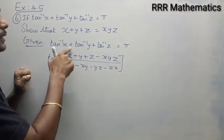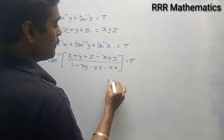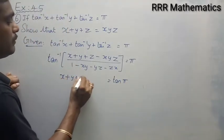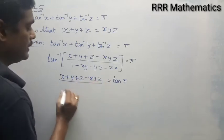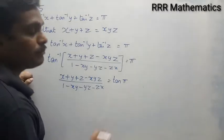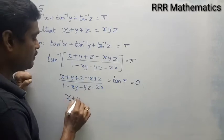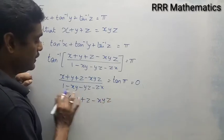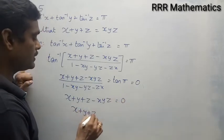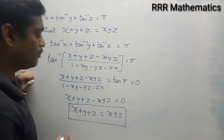So I will use this result, which equals pi. This gives tan inverse of (x plus y plus z minus xyz) divided by (1 minus xy minus yz minus zx) equals pi. What is tan pi? It gives zero. So cross multiply: x plus y plus z minus xyz equals zero times (1 minus xy minus yz minus zx), which is 0. Therefore, x plus y plus z equals xyz.